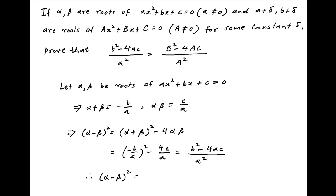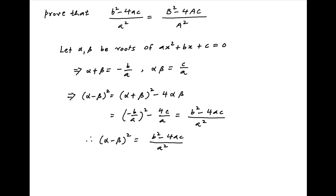Therefore, (alpha minus beta)² is equal to (b² minus 4ac) upon a². Let's call this Result 1.